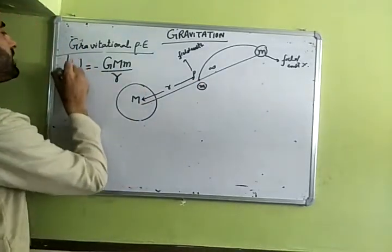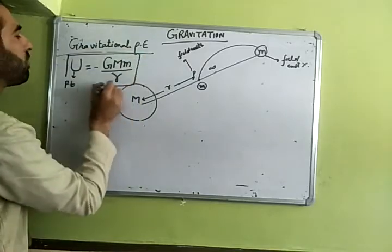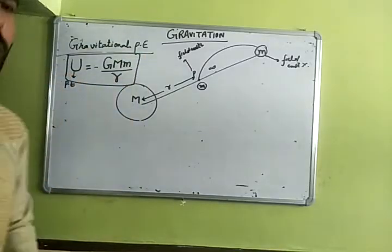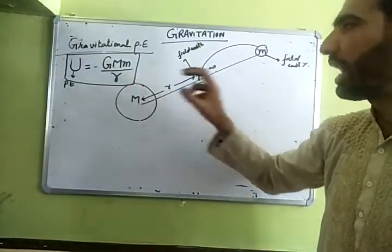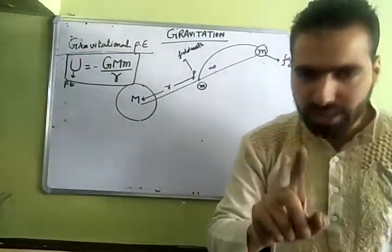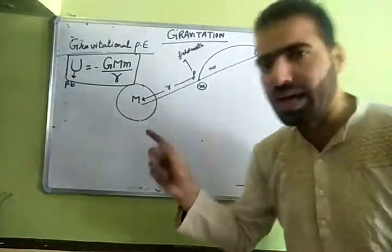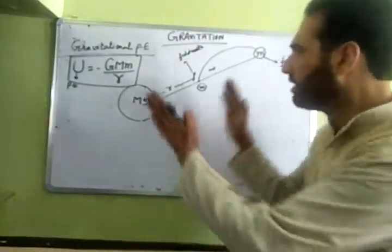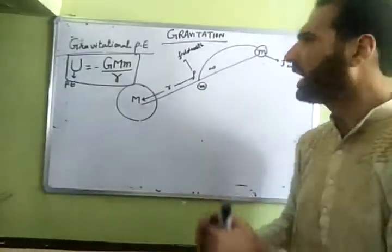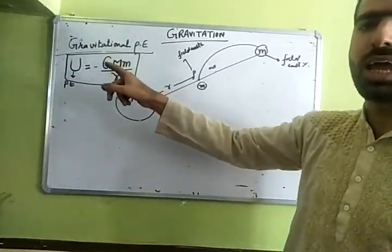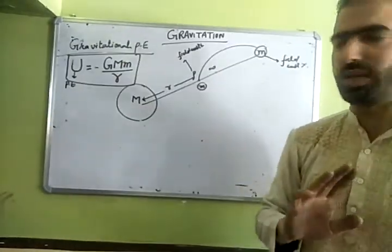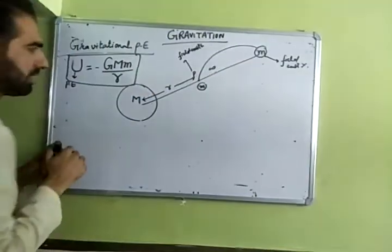So this is the gravitational potential energy of two point masses, two bodies. Remember, gravitational potential energy is a term related to a system of two bodies, not to a single body.